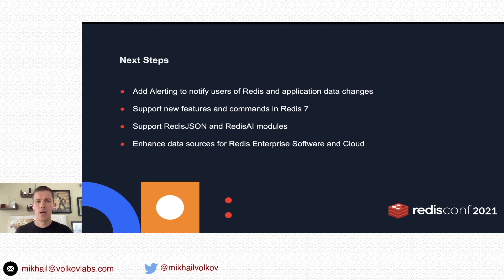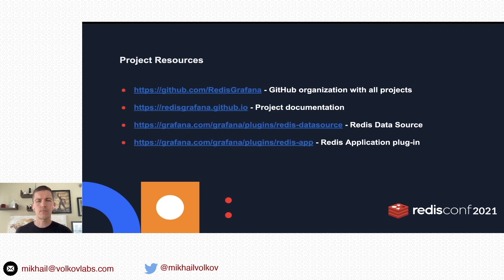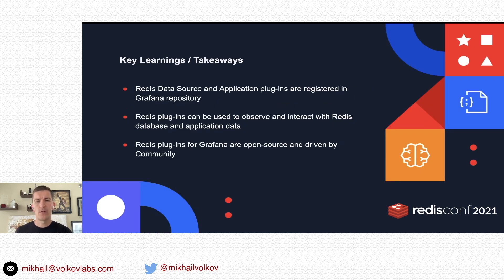What are our next steps? We plan to add alerting to notify users of Redis and application data changes, support new features and commands in Redis 7, Redis JSON and Redis AI modules, and also enhance data sources for Redis Enterprise software and cloud. To learn more about the project, you can go to the GitHub organization page. Project documentation is available at redis-grafana.github.io. Redis data source and application plugins are registered in the Grafana repository and can be easily installed in Grafana, Grafana Enterprise, and Grafana Cloud.